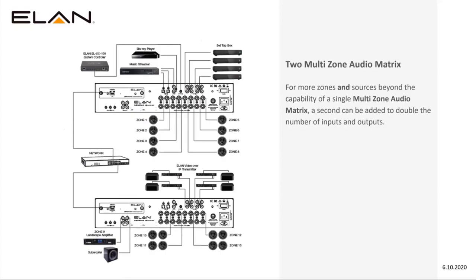What if you need both more inputs and more outputs? You can just add another MTX box. Unlike any of our previous chassis, when you add another chassis it adds more sources as well. If you had an S86 and added another S86, you only added outputs with no new source inputs — that's not the case here. The sources connected to chassis one are available to all connected devices on chassis two and vice versa.